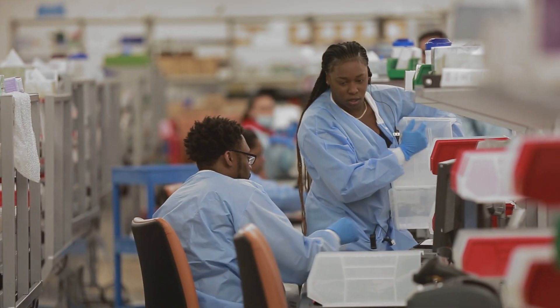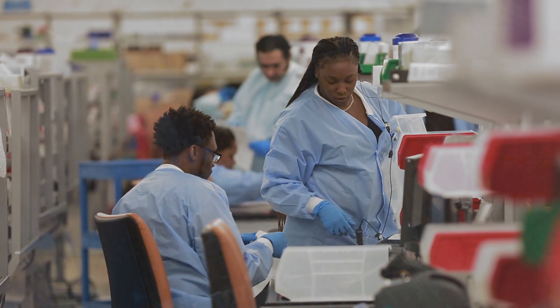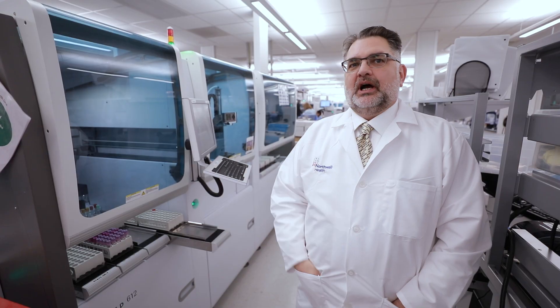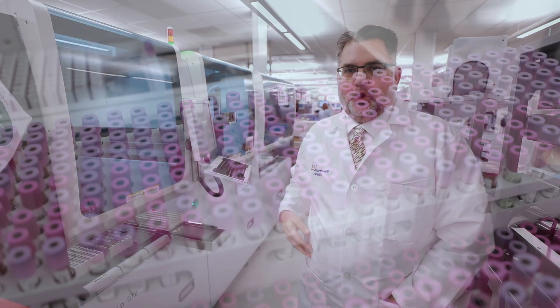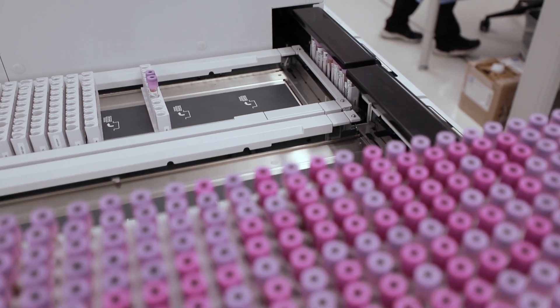Once the specimens come in from receiving they're sorted. The ones that are not barcode ready labeled come in here to accessionate so that the automated machines can automatically do the testing. They will sort the test tubes into racks. This sets them up so they can go down the automated conveyor belts into the analyzers.